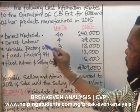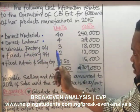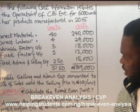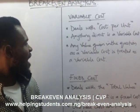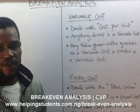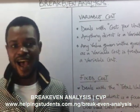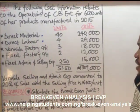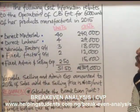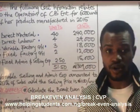Direct labor will also be a variable cost. Now, we also have variable factory overhead. Any value given in the question labeled as a variable cost is treated as a variable cost. So the variable factory overhead is also treated as a variable cost.